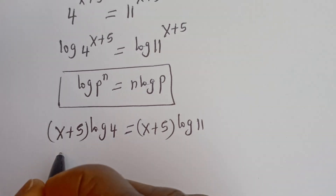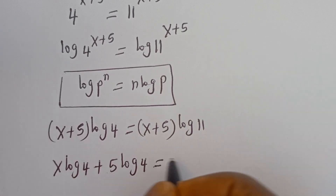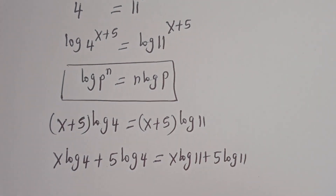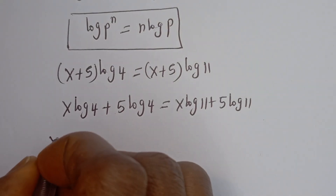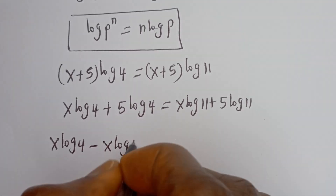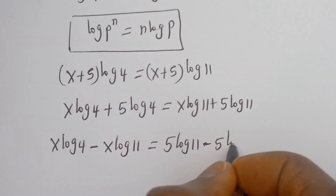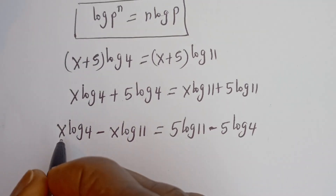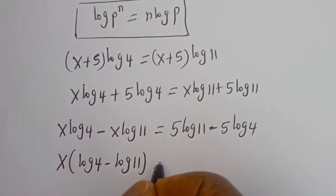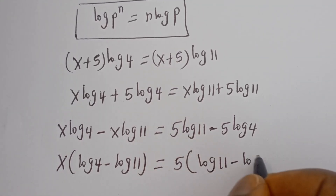Opening the brackets, we have x log 4 plus 5 log 4 is equal to x log 11 plus 5 log 11. Taking the x terms to one side, we have x log 4 minus x log 11 equals 5 log 11 minus 5 log 4. Factoring, we have x times (log 4 minus log 11) is equal to 5 times (log 11 minus log 4).